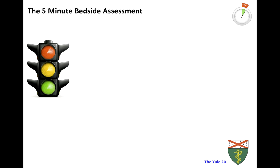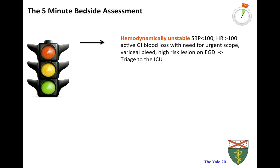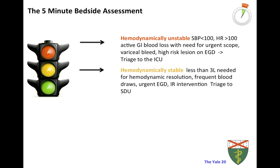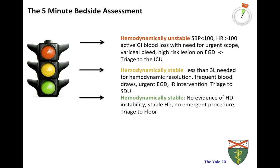Let's talk about how to triage these patients. A patient with persistent hemodynamic instability despite adequate fluid resuscitation, or any patient with a high-risk bleed such as a variceal bleed or a rapid peptic ulcer bleed that might require urgent endoscopy, should probably be triaged to the ICU. A patient who was unstable but improved with fluids, who may need closer attention due to frequent blood draws or possibly urgent EGD, is probably most suited for the step-down unit. Finally, a patient who had an episode of melena but never showed hemodynamic instability, has maintained a stable hemoglobin, and will not need emergent intervention is probably okay to be watched on the floor.